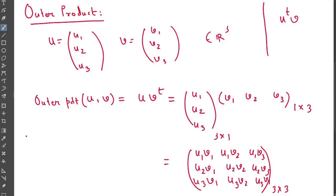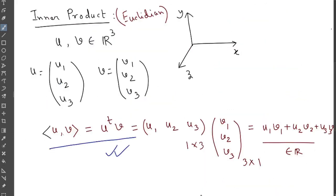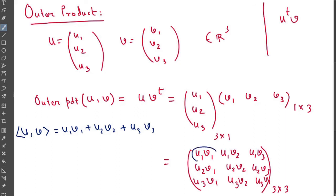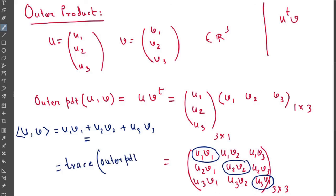And one thing — earlier we saw that the inner product between u and v was u1v1 + u2v2 + u3v3. You can easily check from this outer product matrix: if you add the diagonal elements u1v1, u2v2, and u3v3, you get that value. So this is nothing but the trace of the outer product matrix. The trace of the outer product equals the inner product. Trace means the sum of the diagonal entries. So this is all about inner product and outer product.